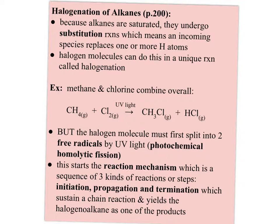For example, methane and chlorine molecules can combine overall to form CH₃Cl and HCl. What happened is one hydrogen is broken off the methane and replaced by a chlorine, and then the other chlorine pairs up with that hydrogen that was released to form the HCl. But the whole process is actually far more complicated than this.